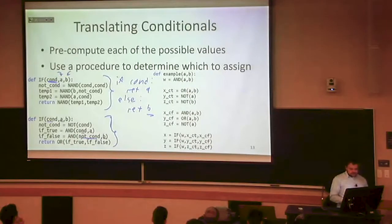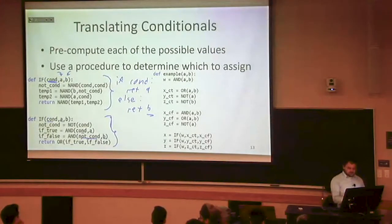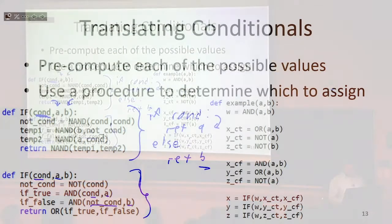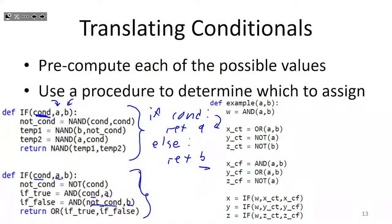So there are only two situations where we end up returning true when we look through the truth table. That's where the condition was true, putting us into the if-part, and a was true, so we returned a — thereby returning true. Or if the condition was false, that put us in the else-part, so we return the value of b. The only way we'd return true when the condition was false is when b happened to be true.